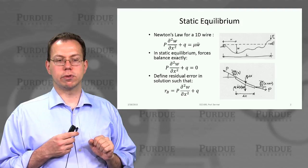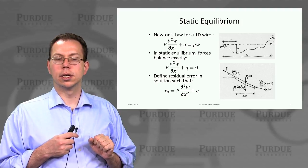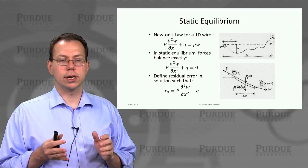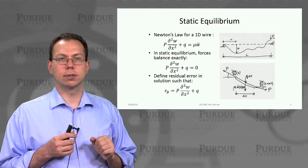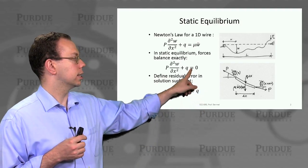In static equilibrium, the forces should cancel. So mu W double dot equals zero.